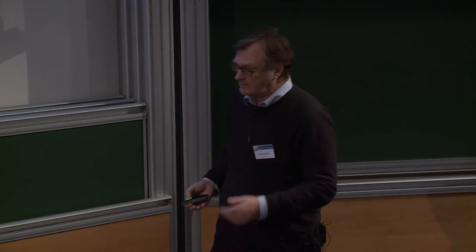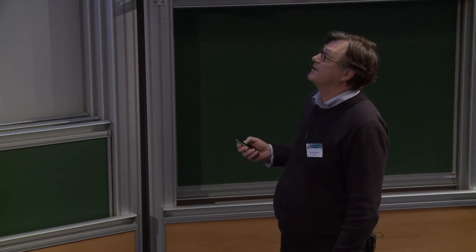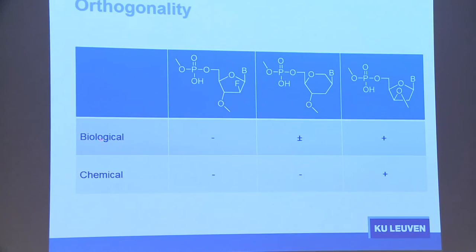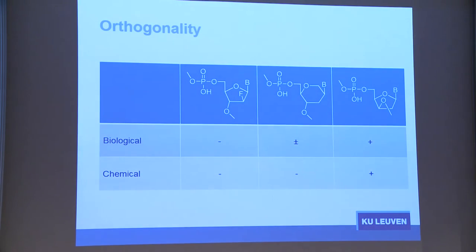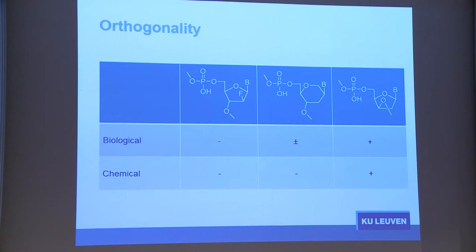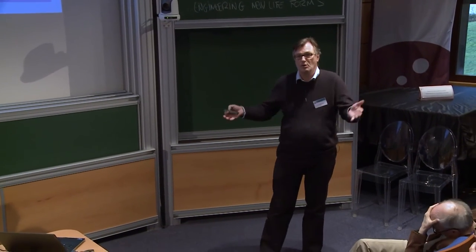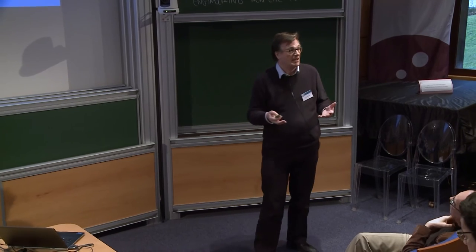An orthogonal information system is one that is synthetically and functionally isolated within the cell and does not cross-react with the natural nucleic acid — it does not interfere with it, does not recognize it, and has its own genetic system that does not talk to the natural system. Orthogonality can be thought of in a biological sense — meaning the molecule is not recognized by the natural system as a biological entity, shows no toxicity, and is not converted to triphosphates — or in a chemical sense, meaning the alternative nucleic acids do not hybridize with DNA and RNA at all.